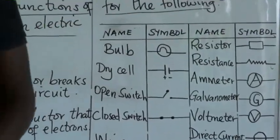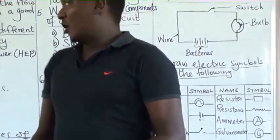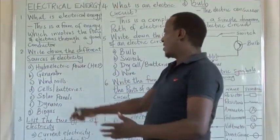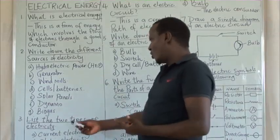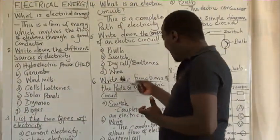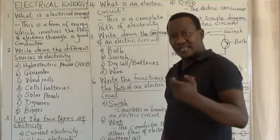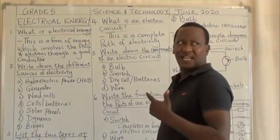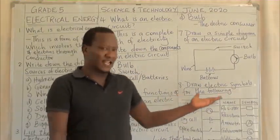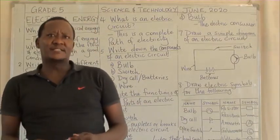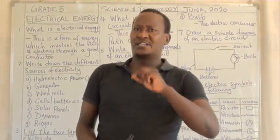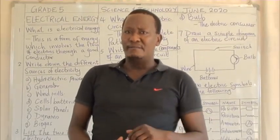So my dear learners, for today it was an introduction to this new topic called electrical energy. We have looked at what it is, the types of electricity, what an electric circuit is and its components, the parts and functions of an electric circuit, and the symbols of electrical devices. Till next time, we are going to look at the types of electric circuit and their characteristics. Have a nice day, stay safe and remain blessed.